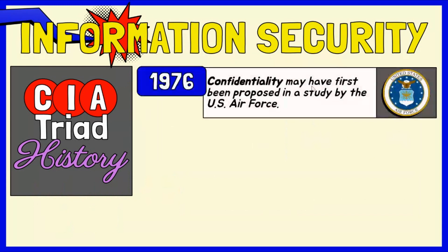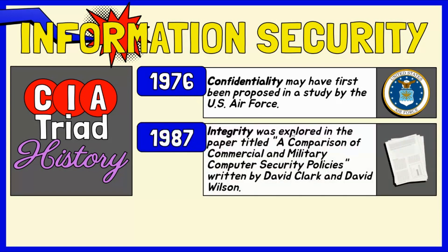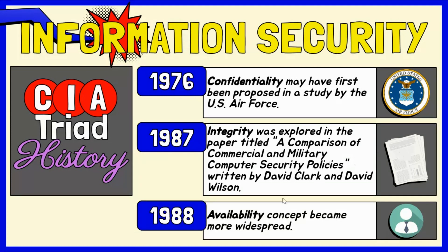The concept of the CIA triad formed over time and does not have a single creator. Confidentiality may have first been proposed as early as 1976 in a study by the U.S. Air Force. The concept of integrity was explored in a 1987 paper titled 'A Comparison of Commercial and Military Computer Security Policies,' written by David Clark and David Wilson. The paper recognized that commercial computing had a need for accounting records and data correctness. The concept of availability became more widespread one year later in 1988, and by 1998, people saw the three concepts together as the CIA triad.